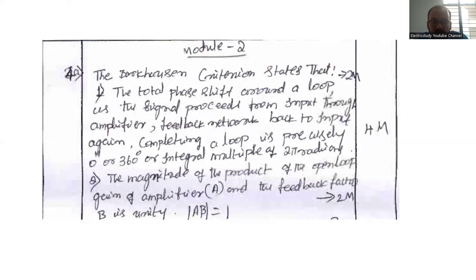Also, you have to talk about the gain, A beta that is equal to 1. So this is regarding the Barkhausen criteria.